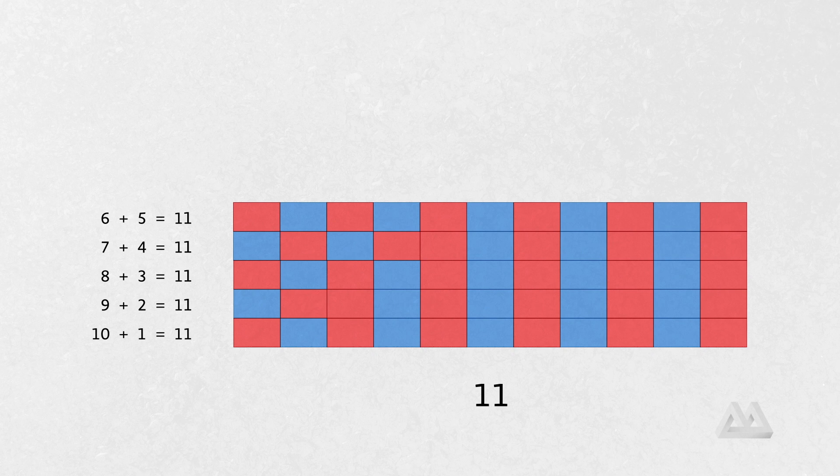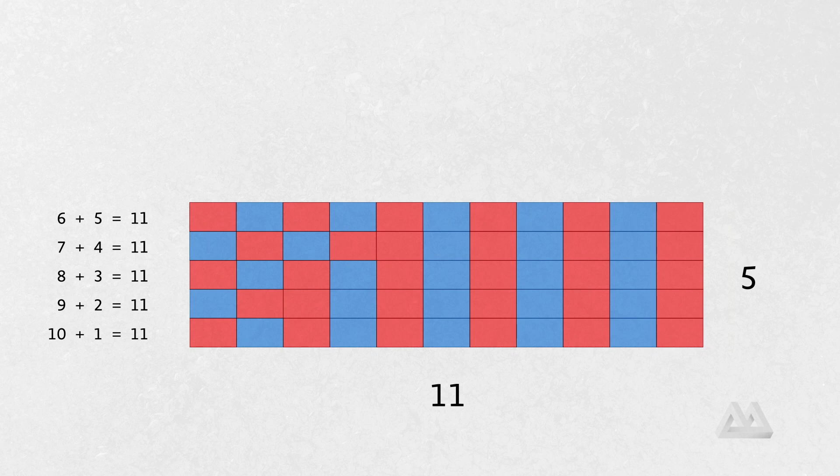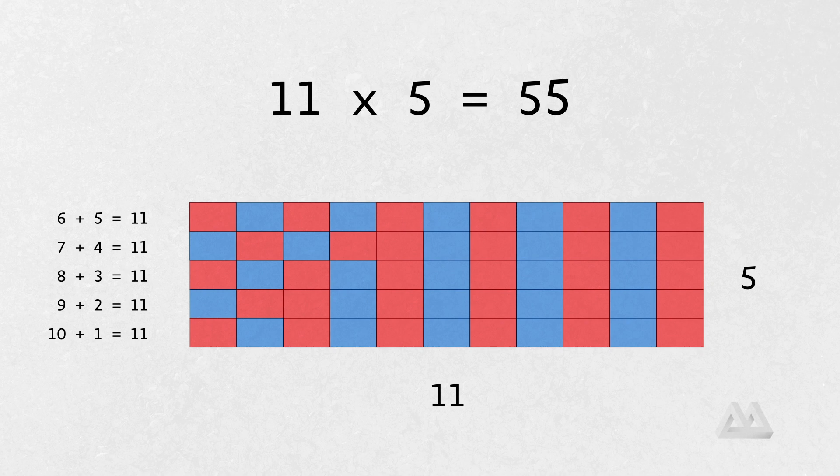The point is that we have 11 across the bottom. So, the base of our rectangle is 11. And then our height is going to be 5. We can just see there's 1, 2, 3, 4, 5. So, 11 times 5 is 55. And that's a really nice way of calculating that very quickly.